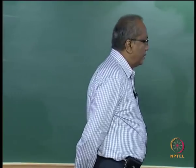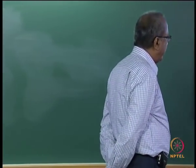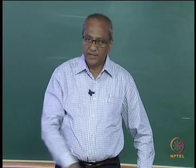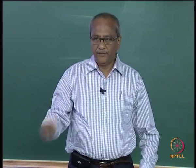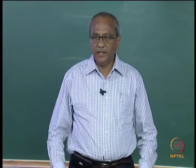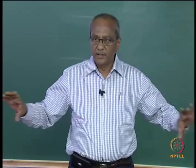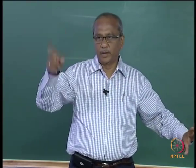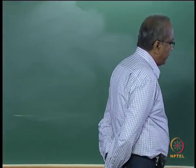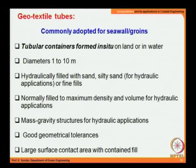Geotubes are normally filled to maximum density and volume for hydraulic applications. They function as mass gravity structures with good geometrical tolerances. Although the tube is circular, after filling and placing in situ it takes the shape of a sausage — more like an ellipse — with a large surface contact area with the contained fill.